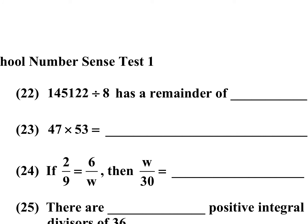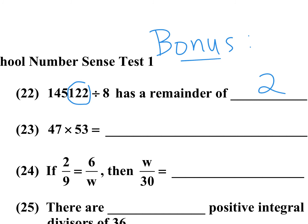Now we have bonus problems. Number 22: when dividing by 8 to find a remainder, you only need to look at the last three digits. When dividing by 4, look at the last two digits. Here, 120 is a multiple of 8, so the remainder is 2 — meaning 122 divided by 8 has a remainder of 2.